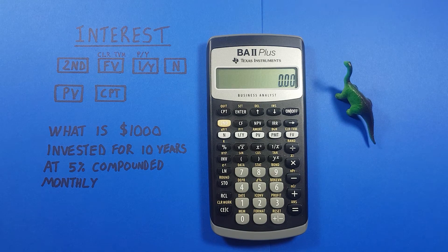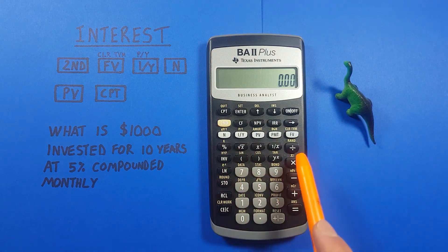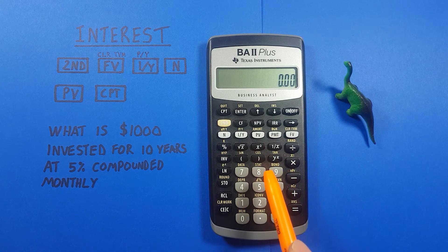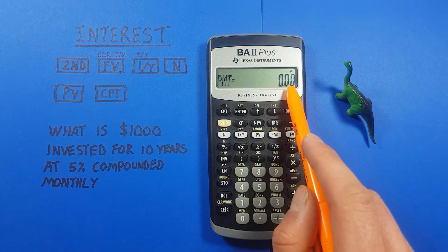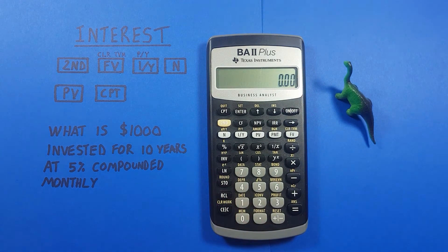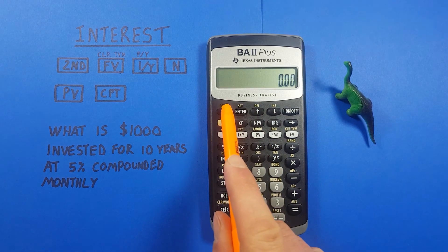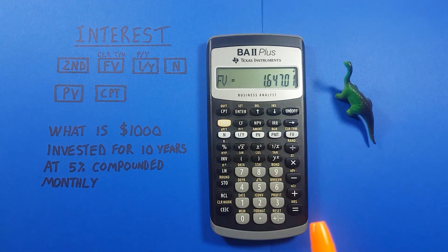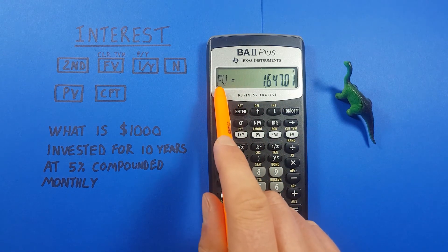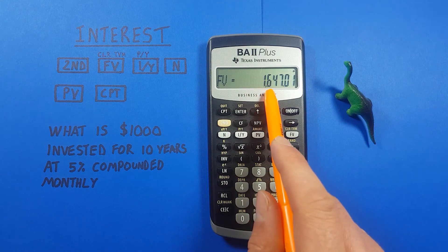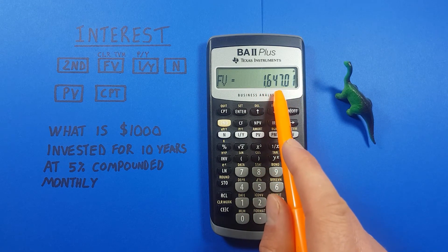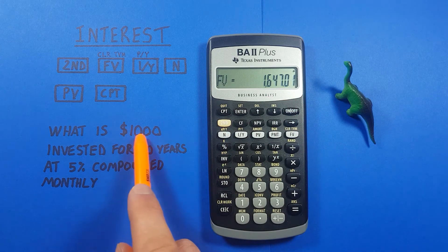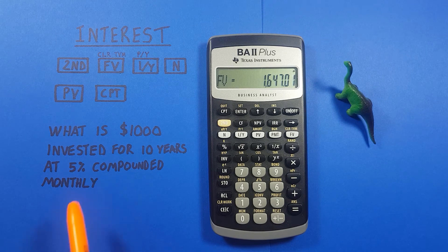This next step isn't necessary but I like to do it to confirm — I set PMT or payments to 0, because we're making no additional payments after our initial investment. So PMT equals 0. We clear the screen and we've entered all our data. To compute, we press the CPT key at the top and get our result by pressing the FV key. It gives us FV or future value of $1,647.01 — that's how much we'll end up with investing $1,000 over 10 years at 5% interest compounded monthly.